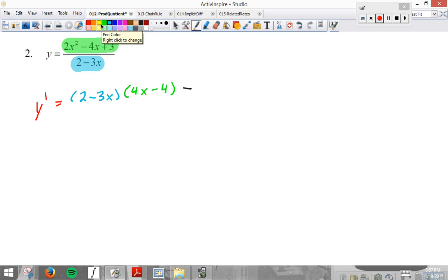Minus high, so the exact copy of the high function word for word, letter for letter, symbol for symbol, times the derivative of the low function. Derivative of 2 is 0, derivative of negative 3x is negative 3. Again you could look at that as a line, what's the slope of that line? Negative 3. All over low squared, and by low squared we mean the original low function squared.